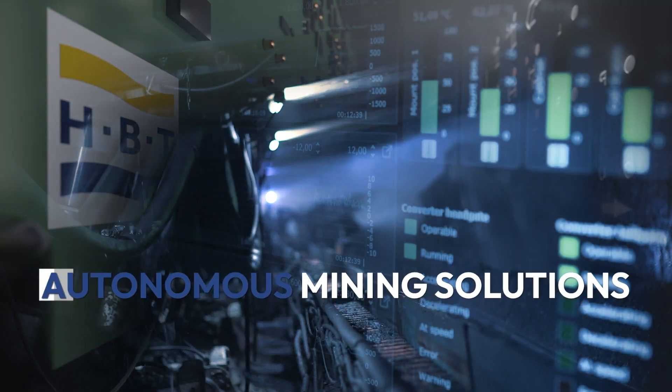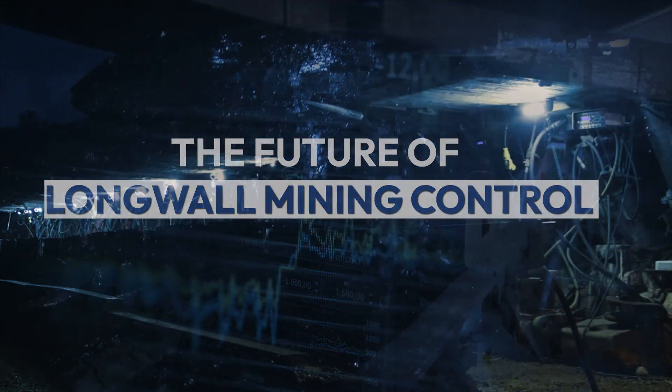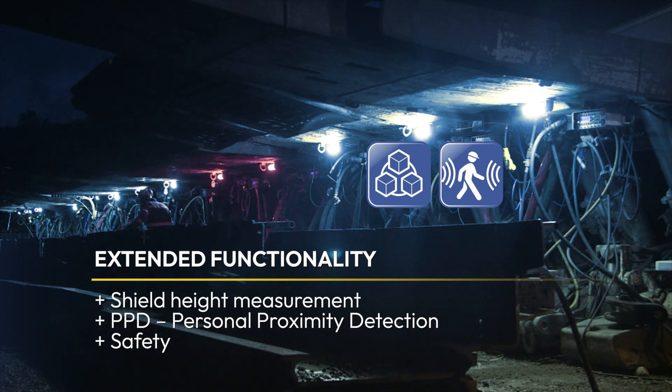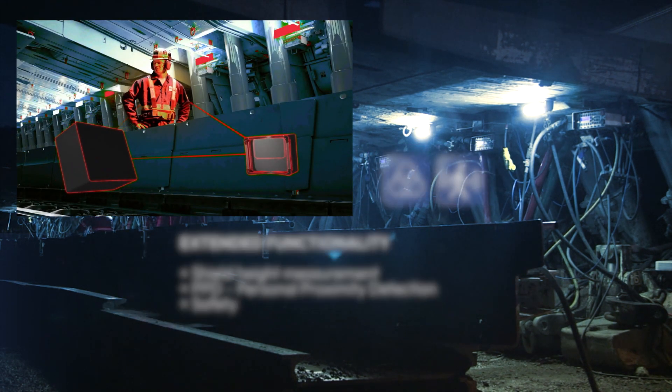External sensors are easily connected, transmitting data on shear position, shield height or the position of miners in your longwall. Personnel proximity detection through the PMCR 2.0 network makes your longwall safer.